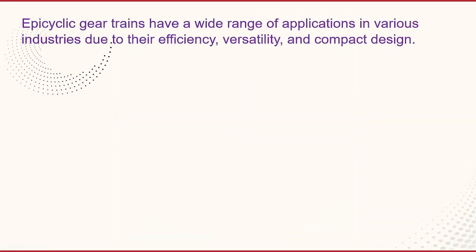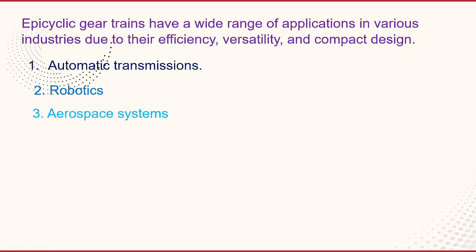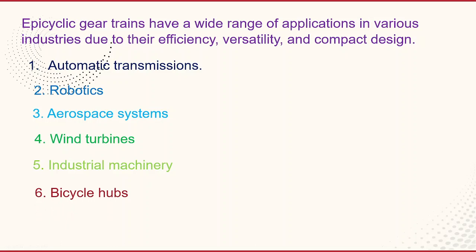Epicyclic gear trains have a wide range of applications in various industries due to their efficiency, versatility, and compact design. They are frequently used in automatic transmissions, robotics, aerospace systems, and wind turbines. In industrial machinery — such as paper cutting machines, machine automation, and assembly divisions of automobiles — we use these epicyclic gear trains. Bicycle hubs are also an example of epicyclic gear trains.